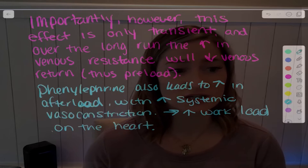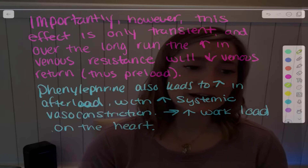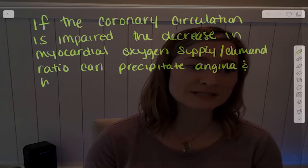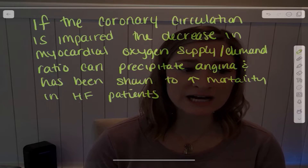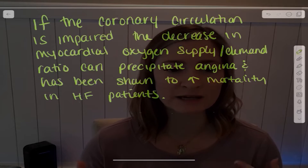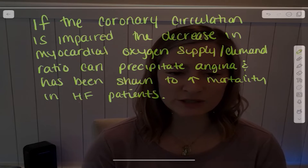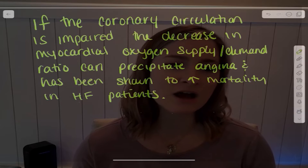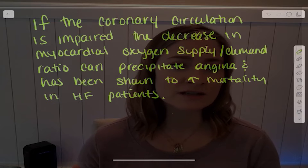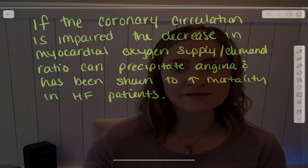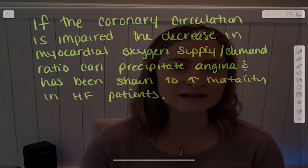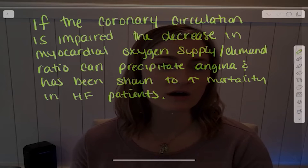Because it's just an alpha-1 agonist, it produces systemic vasoconstriction and therefore the work of the heart increases. If the coronary circulation is impaired, the decrease in myocardial oxygen supply ratio can precipitate angina and has been shown to increase mortality in heart failure patients. This is not a benign drug — you have to be cognizant of why you're choosing it, whether they need a vasopressor or fluid, and understand the patient's pathophysiology, especially if they have coronary disease.